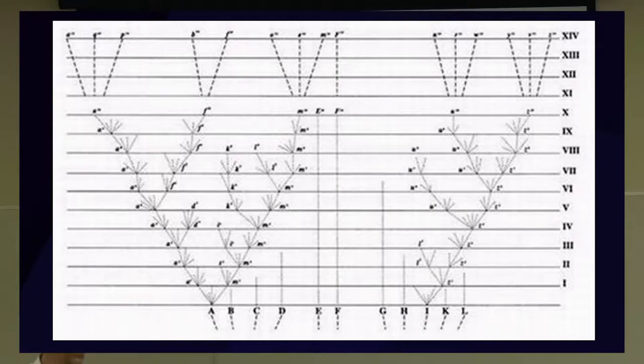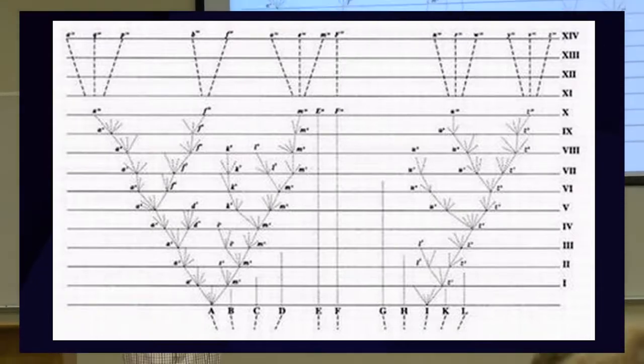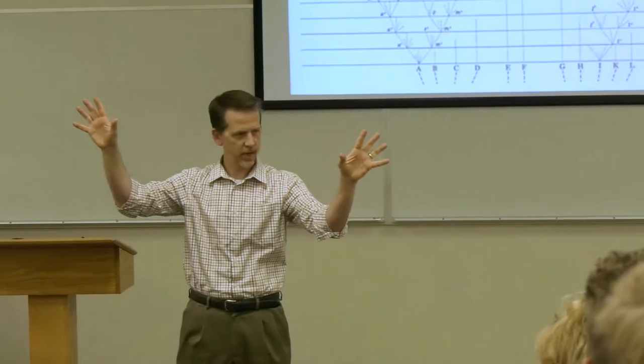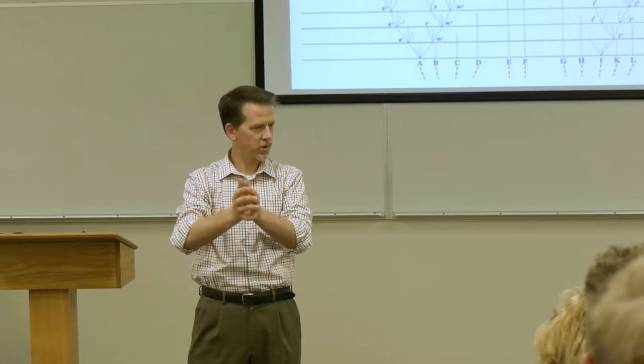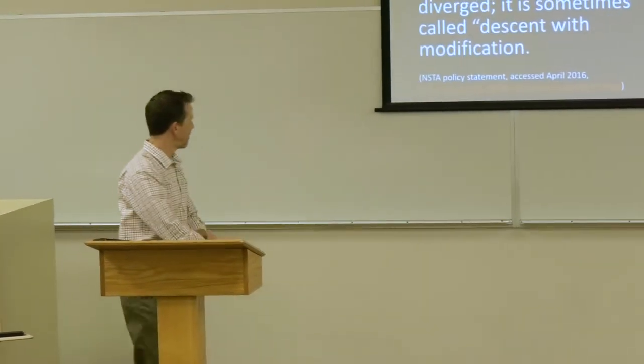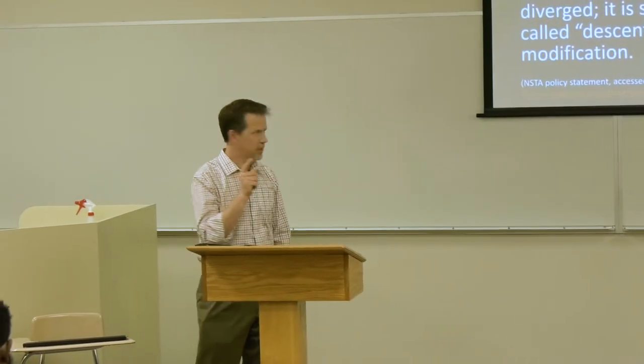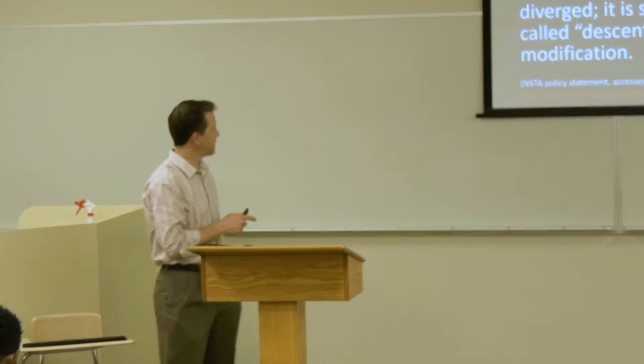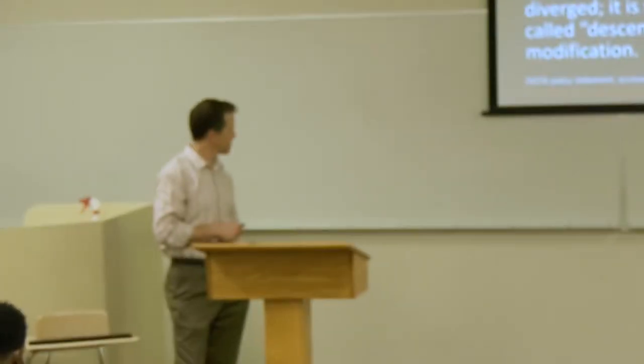Eventually you'll end up with what today is called the last universal common ancestor, LUCA, the last universal common ancestor. You have this tree with all these many branches on it that all converged to a single trunk. Life arose from the tree. Darwin's tree is this iconic image that is part of evolution.